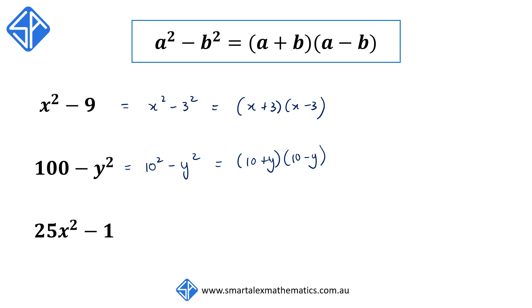Our third example, 25x² - 1, we can rewrite this as (5x)² - 1². So this would factorize to (5x + 1)(5x - 1).